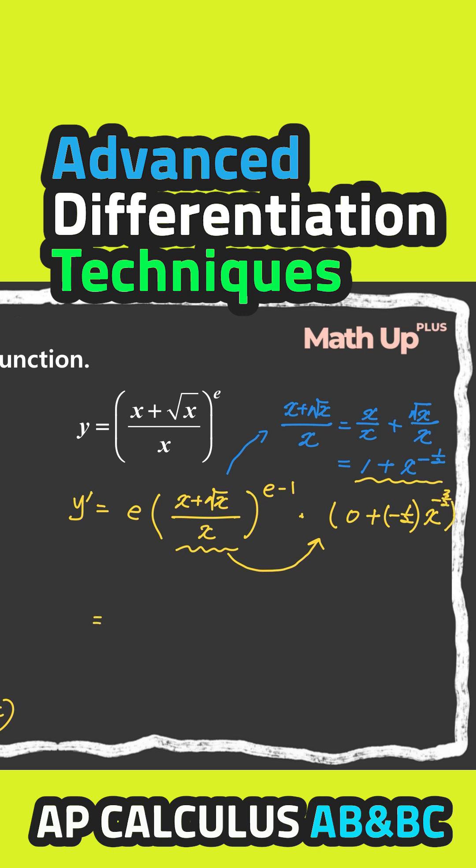So if we simplify this, that's going to be e times x plus square root x over x, e minus 1, times negative 1 over 2, times this expression, that's going to be x to the 3 over 2. In radical form, this is going to be equal to negative 1 over 2 times square root x cubed.